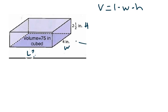Now, I know what my volume is. My volume is equal to 75 inches cubed. I don't know the length. I do know the width is 4 inches. I do know the height is 2 1⁄2 inches.